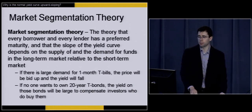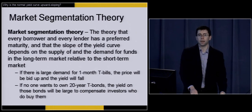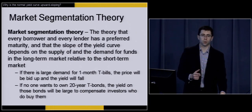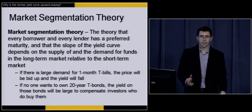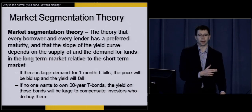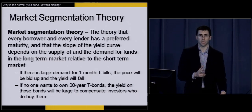Market segmentation theory says that if enough investors are interested in an asset with a specific time to maturity, the interest rate on that asset is going to be driven down. Typically investors are more interested in short-term assets, so the interest rates they're willing to accept are a little lower than what they demand for longer-term assets like a 30-year T-bond or 10-year T-note.